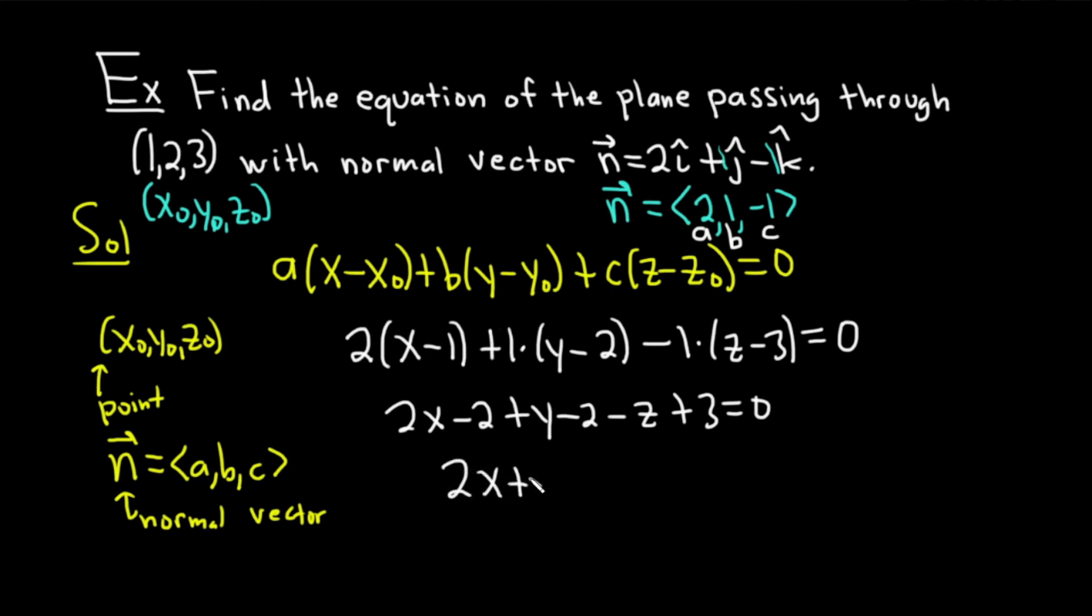We have 2x + y - z. -2 and -2 is -4. And then +3 is 1. So we have -1 = 0. So we end up with 2x + y - z equals, clean up my z there, -z = 1. And that's going to be the equation of our plane.